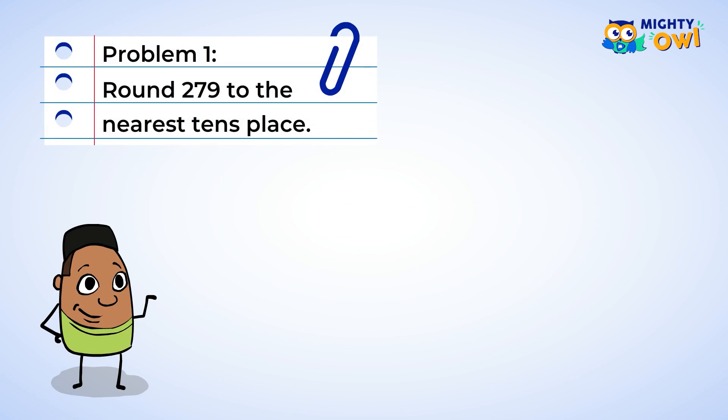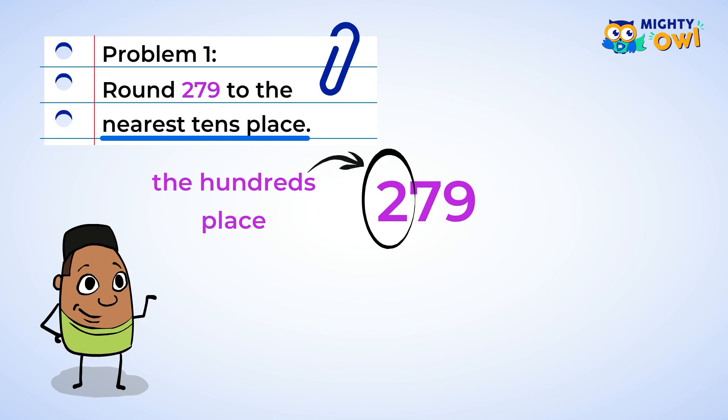Here's an example to practice with. Round 279 to the nearest ten. This number is a little different than the other numbers you were working with before. There are hundreds this time. But that's okay. Don't worry. Just like the previous numbers, look at the number in the ones place, and ignore the other numbers for now.